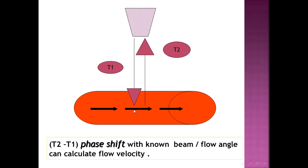We should imagine that for a stationary object, the signal T1 returns in the same pathway, in the same position. But in a moving object, the returning signal will have changed position by a slight distance — the distance from T1 to T2. This is the non-phase shift.